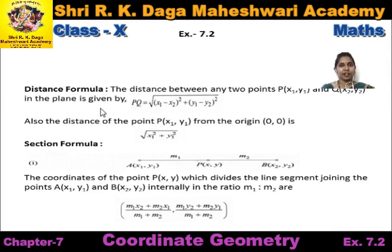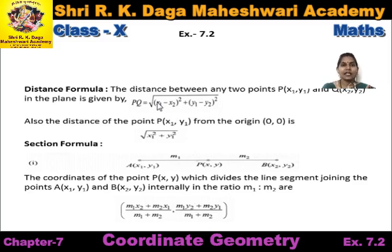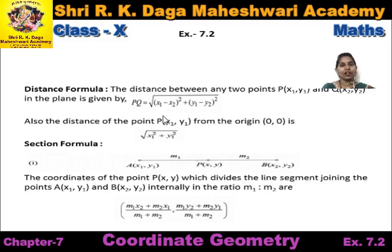In last class we discussed the distance formula. The distance between any two points P(x1, y1) and Q(x2, y2) in the plane is given by PQ = √[(x1 - x2)² + (y1 - y2)²]. We completed exercise 7.1 which was based on this distance formula, used to find the distance between any two points in the Cartesian plane.